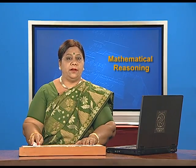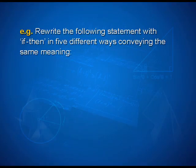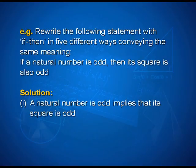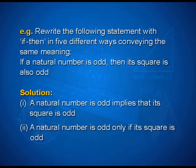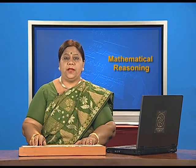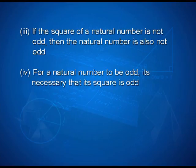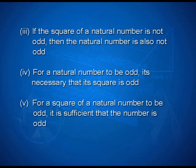Let us look at an example: rewrite the following statement with 'if-then' in five different ways conveying the same meaning — 'if a natural number is odd, then its square is also odd.' First: a natural number is odd implies that its square is odd. Second: a natural number is odd only if its square is odd. Third: if the square of a natural number is not odd, then the natural number is also not odd. Fourth: for a natural number to be odd, it is necessary that its square is odd. Fifth: for the square of a natural number to be odd, it is sufficient that the number is odd.